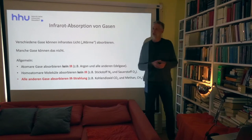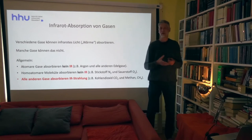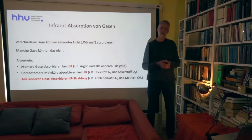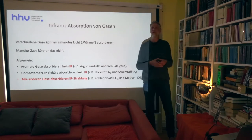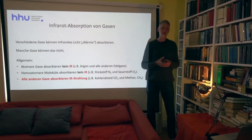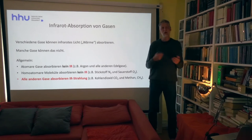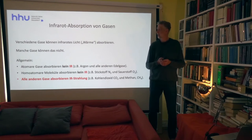Stickstoff kommt zu über 70 Prozent vor, Sauerstoff zu 22 Prozent, Argon zu einem Prozent – alle können keine Infrarotstrahlung absorbieren. Was kann dann überhaupt Infrarot absorbieren und reemittieren? Das sind zum Beispiel Kohlendioxid, Methan und Lachgas (N2O) – alle diese mehratomigen, heteroatomaren Gase. Wenn die schwingen, ändert sich die Ladungsverteilung und damit das Dipolmoment, dann kann Strahlung absorbiert werden.